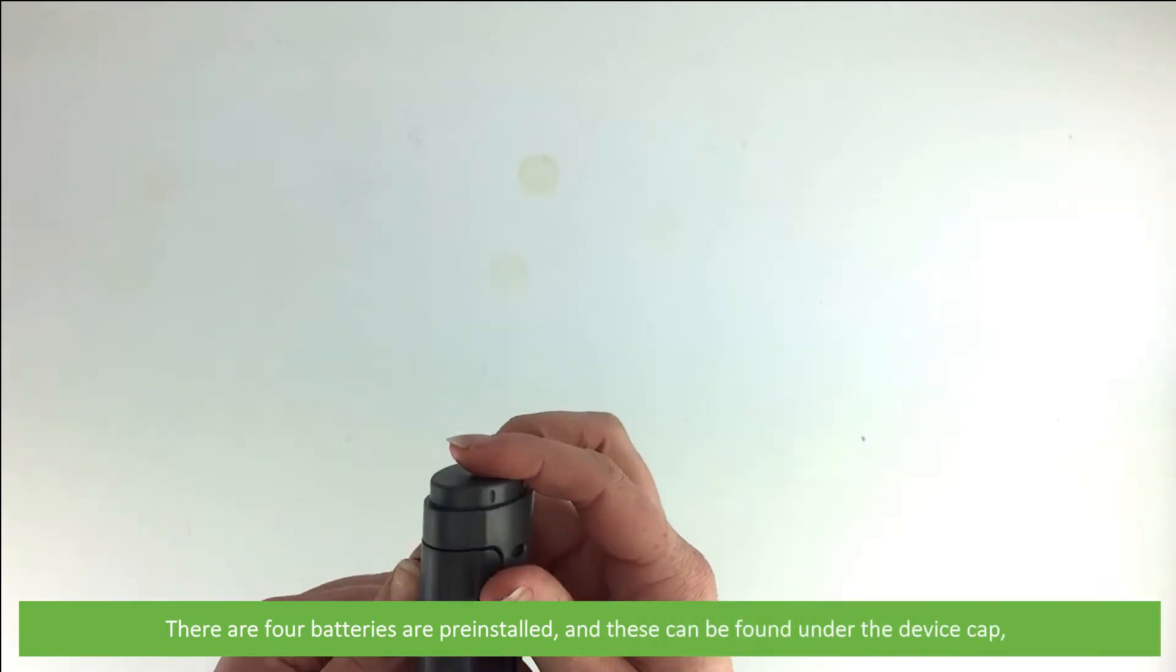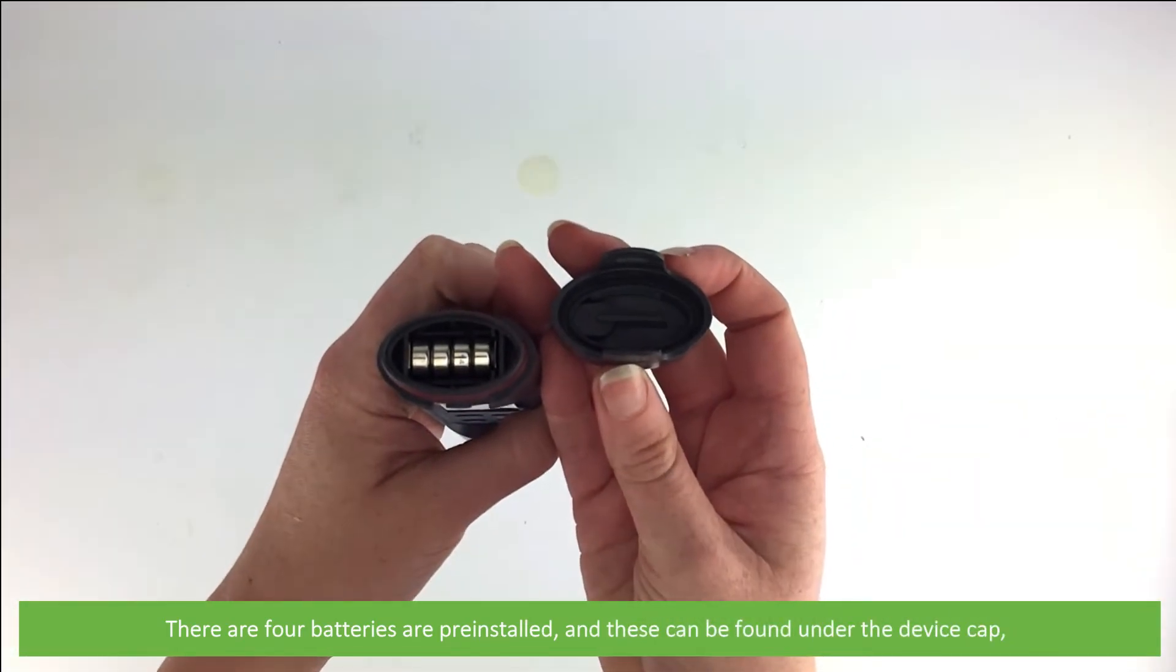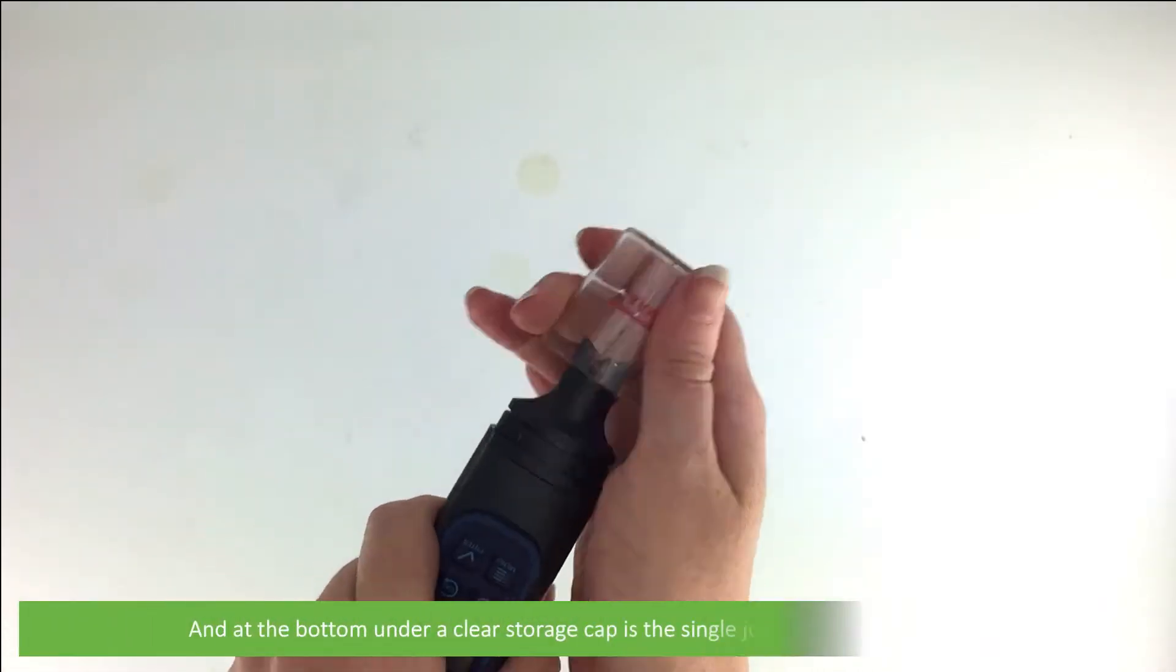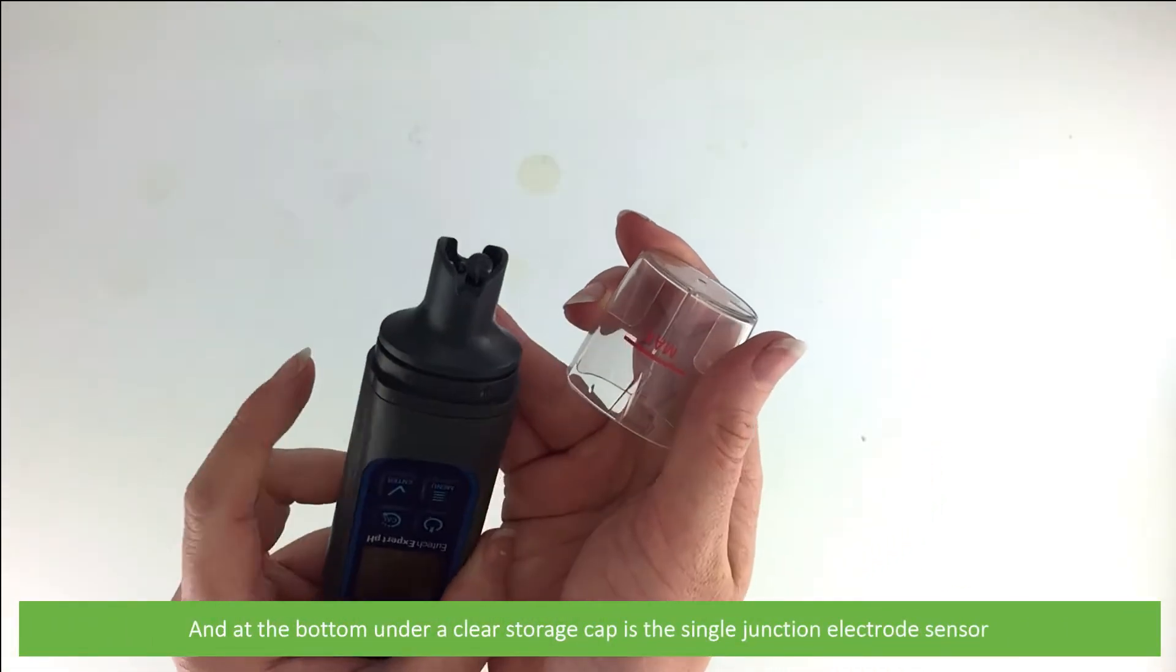There are four batteries pre-installed and these can be found under the device cap. Then at the bottom under a clear storage cap is a single junction electrode sensor.